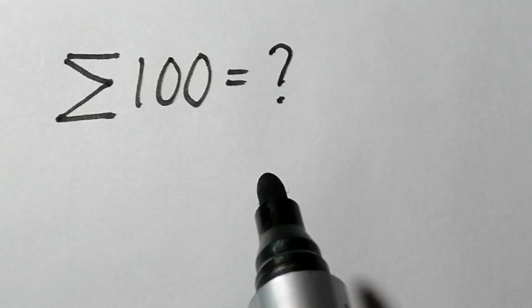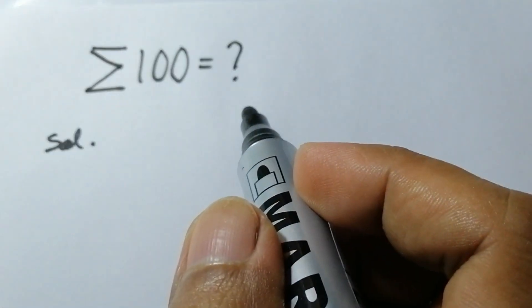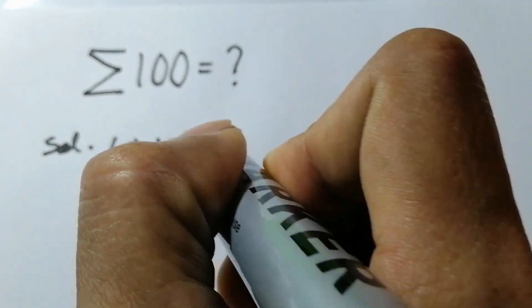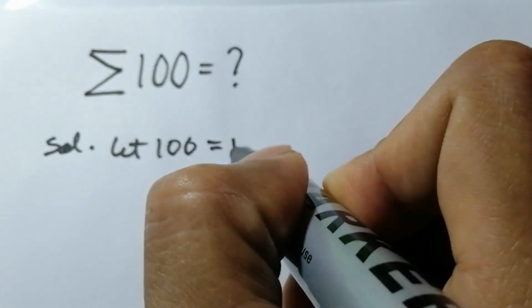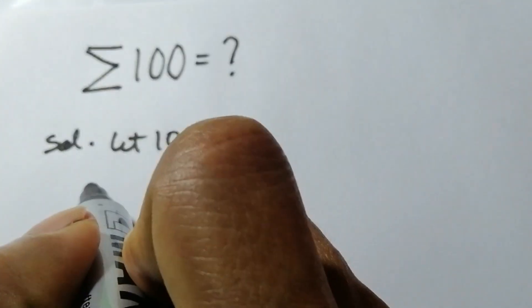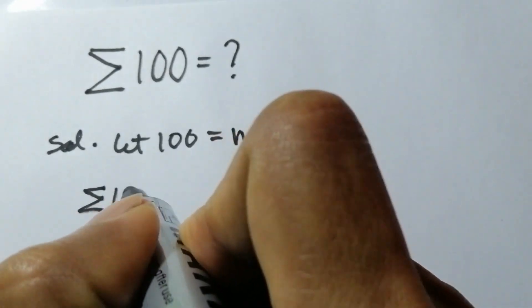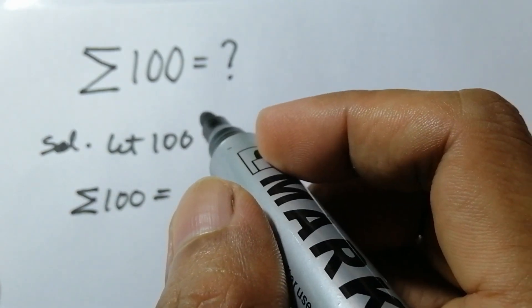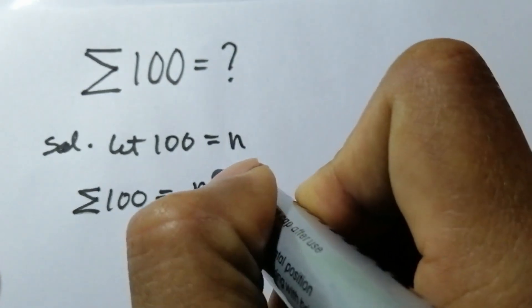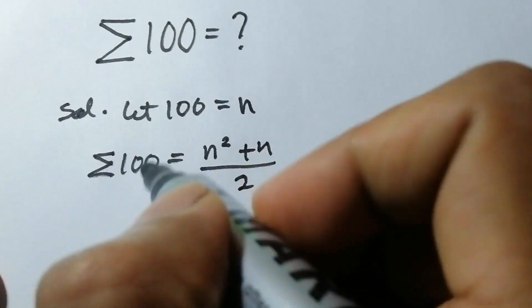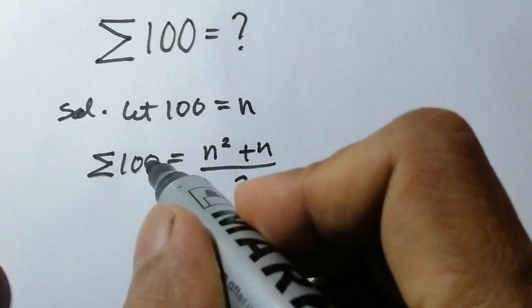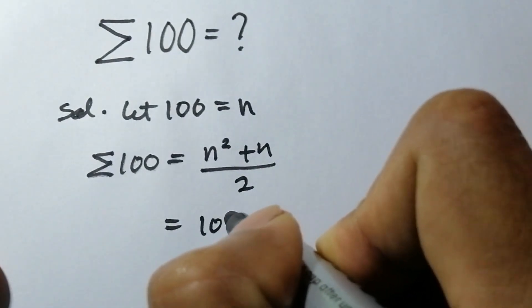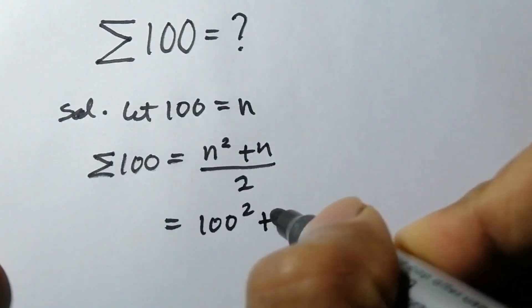The solution is: let 100 equal n. We're going to write summation of 100 equals, and we're going to use this formula: n squared plus n over 2. So this will be, our n is 100, so 100 squared plus 100 all over 2.